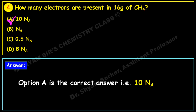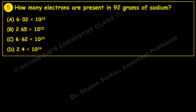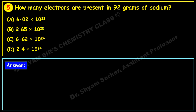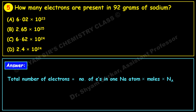The last question: how many electrons are present in 92 grams of sodium? So far all examples were molecules; now we consider an atom — elemental sodium in atomic condition. Using the general formula: total electrons = (electrons per sodium atom) × (number of moles) × (Avogadro's number).